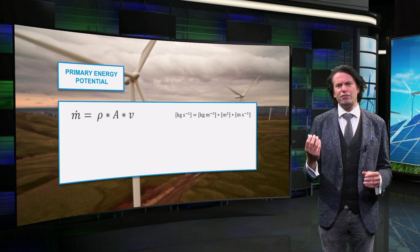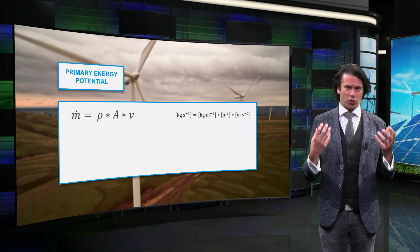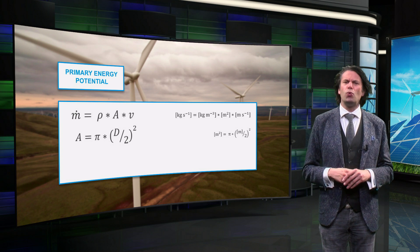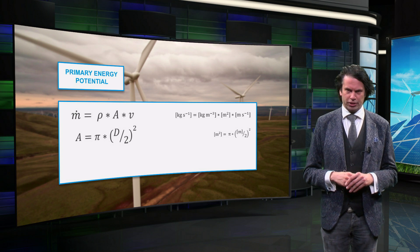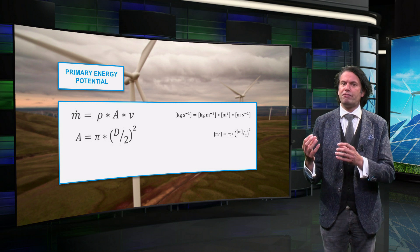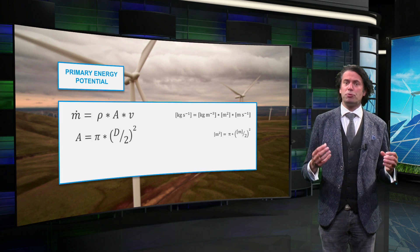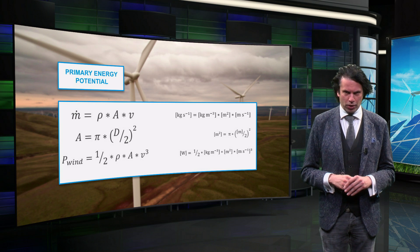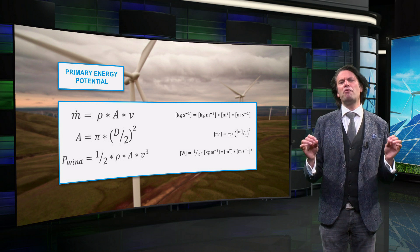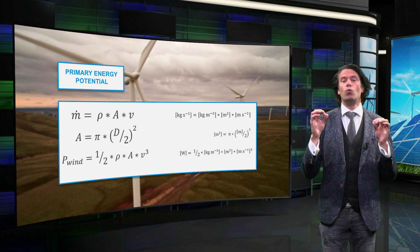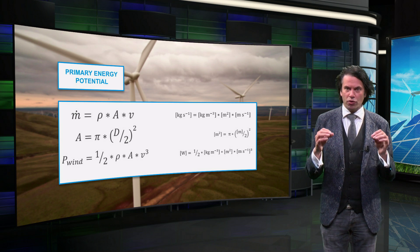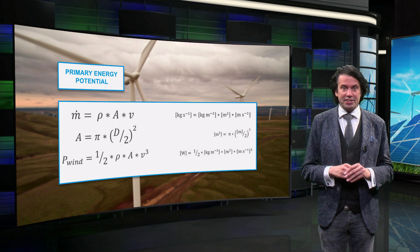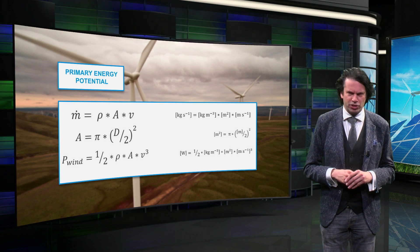The mass flow itself is equal to the product of the air density, the surface area of the rotor, and the wind velocity. By inserting this definition of the mass flow, we obtain this equation for the wind power. The power is expressed in watts, the density in kilograms per cubic meter, the area in square meters, and the velocity in meters per second.